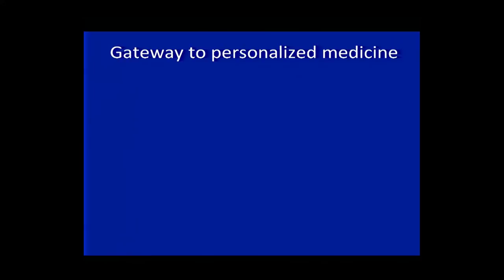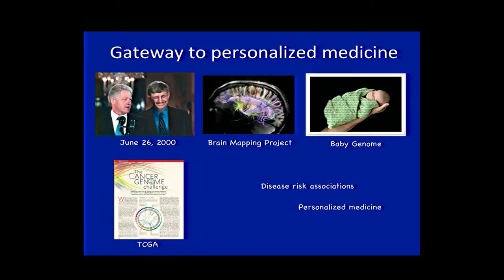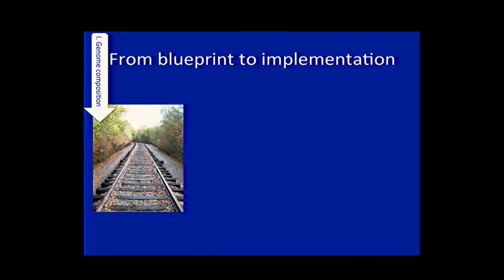But while all this progress was being made, something interesting was happening to shake our relative comfort in the central dogma. Back in 2000, President Clinton, standing next to Francis Collins, announced the completion of the draft human genome, calling it the most important and most wondrous map ever produced by humankind. That announcement marked the beginning of a new era. We're now 14 years later, on the horizon of having personalized medicine — the ability to diagnose and treat diseases based on the genetic makeup of an individual.